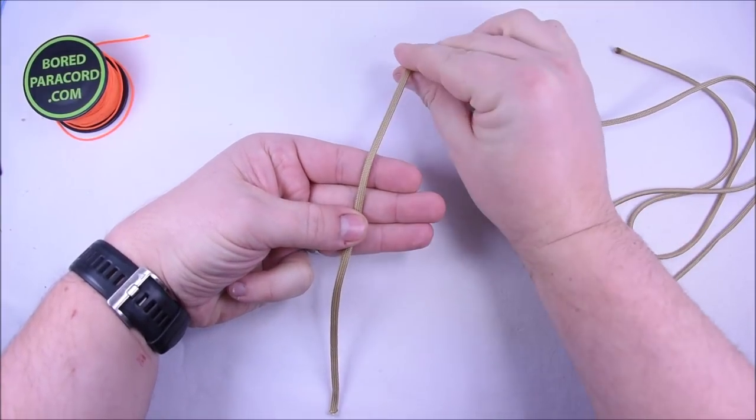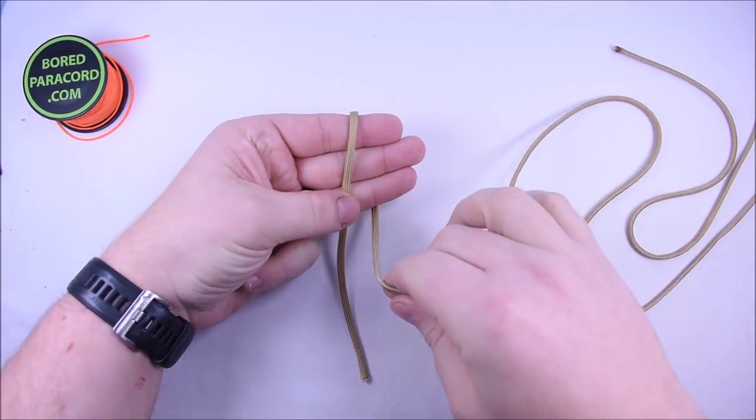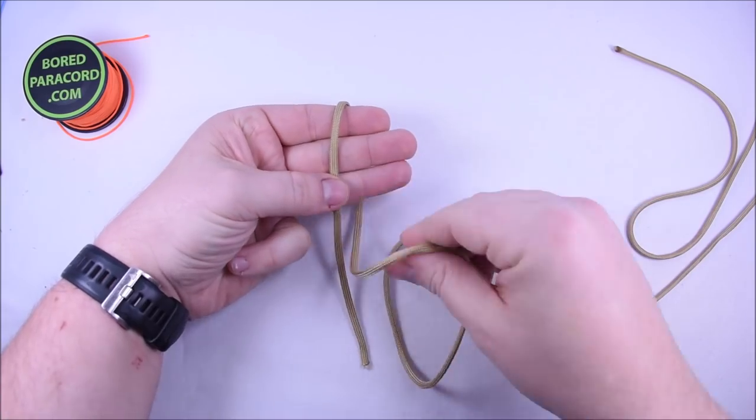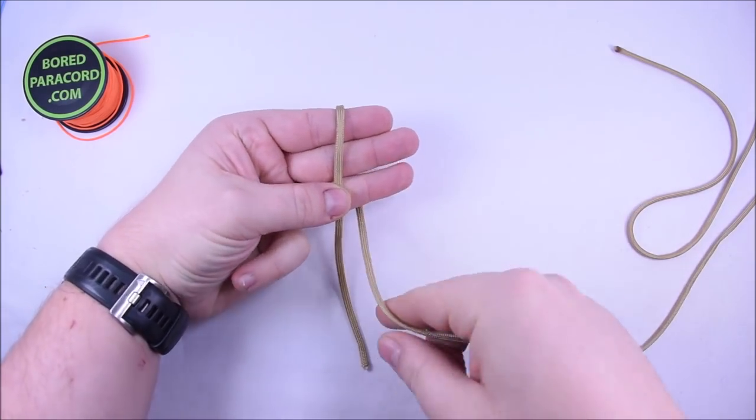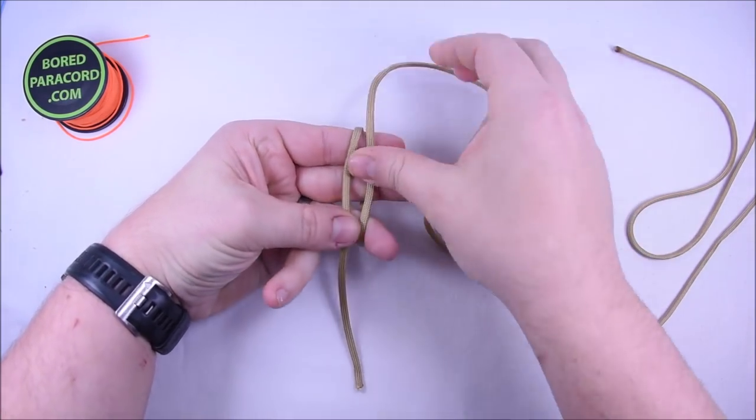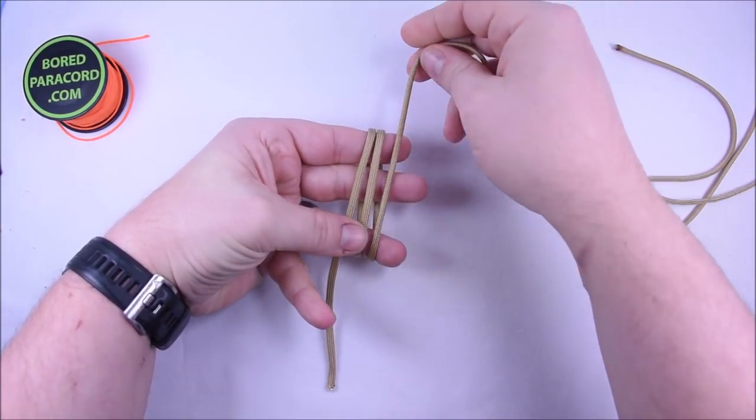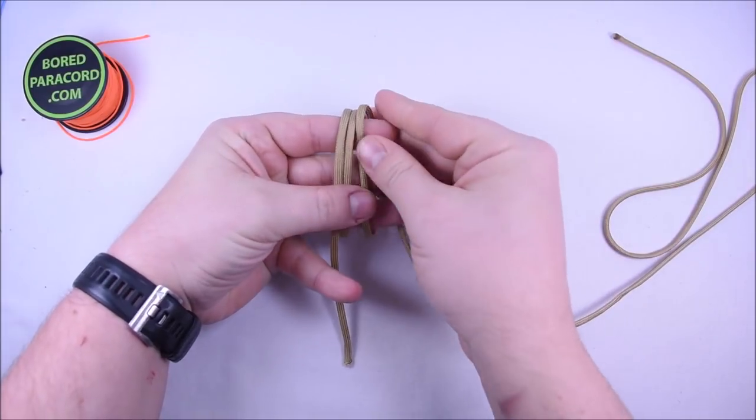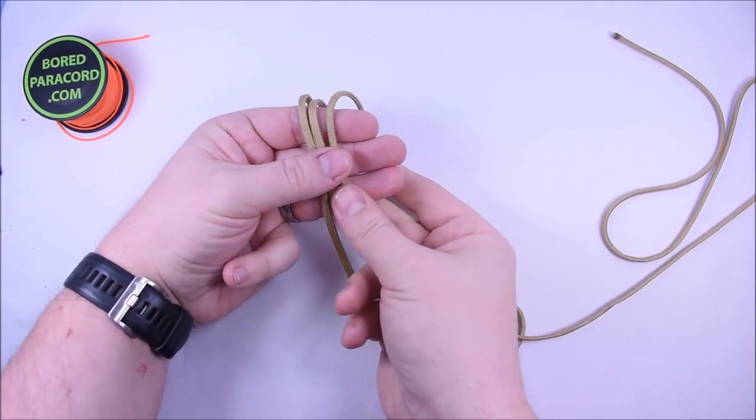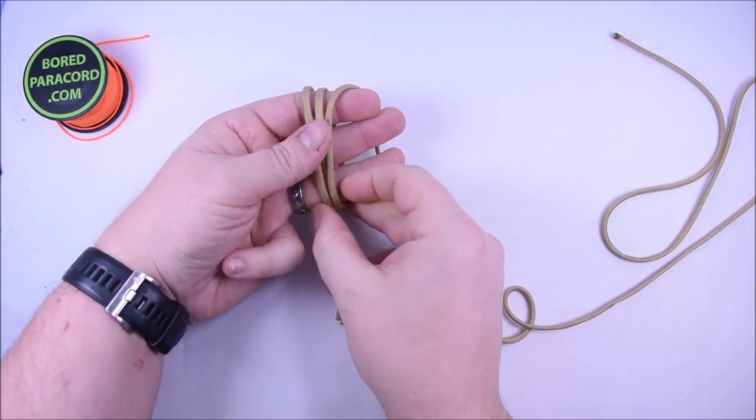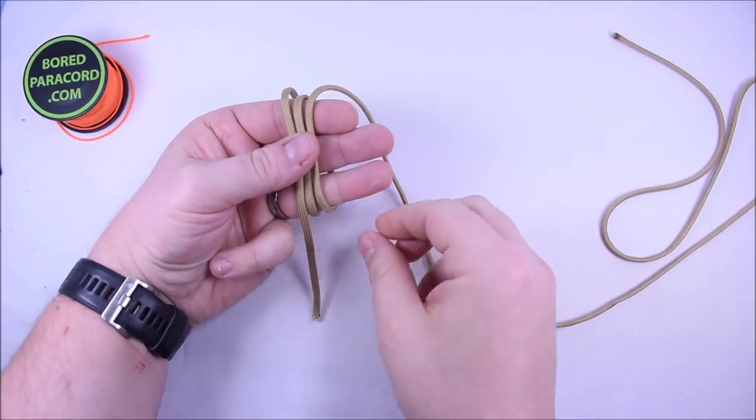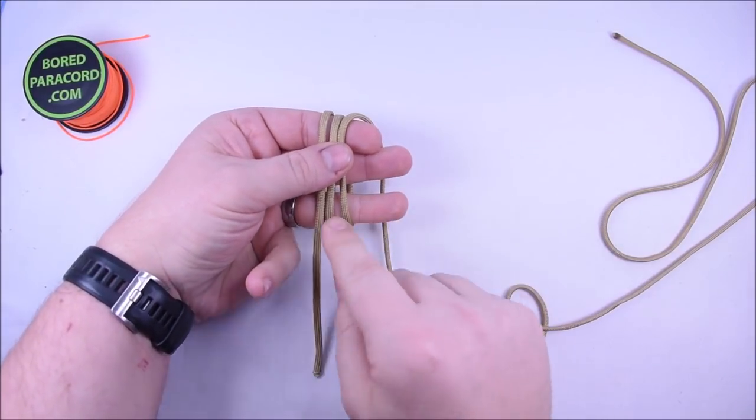Grab your paracord and you're going to make three wraps moving to the right. So that's two, and you can count them: one, two, three. What you're looking for is you want to have three on each side, and that's going to be kind of the thing that you're looking for the whole time here.